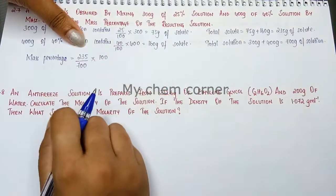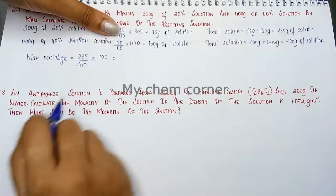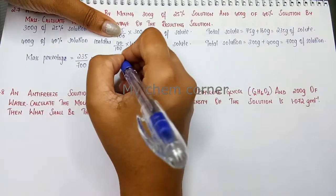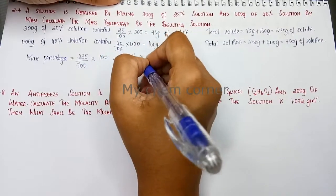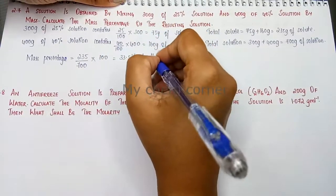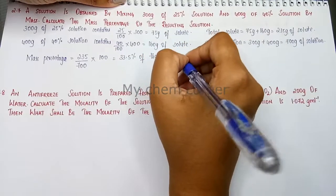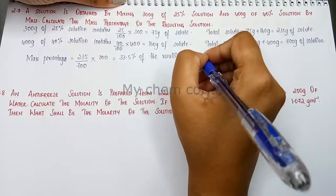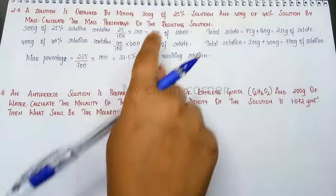So when I simplify this, I will get 33.3% of the resulting solution. This is going to be the percentage of the solution.